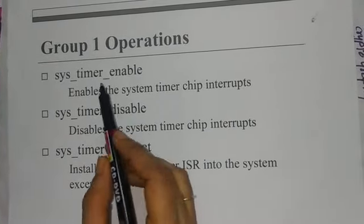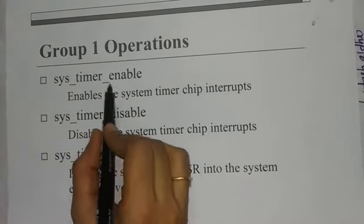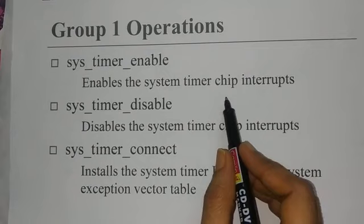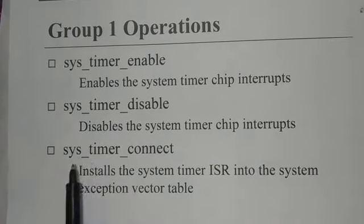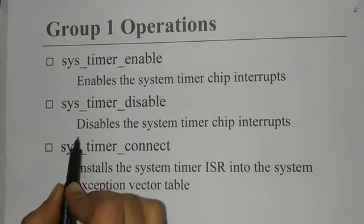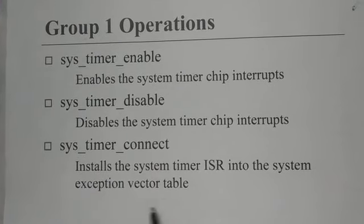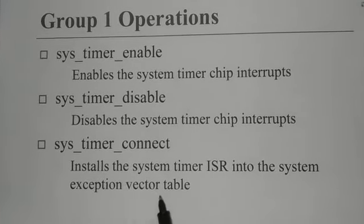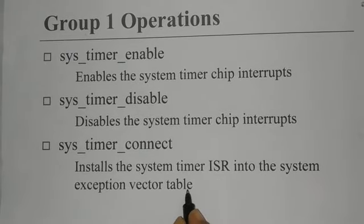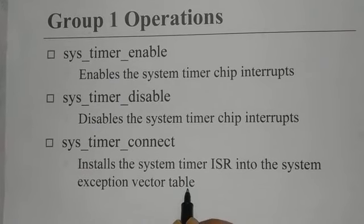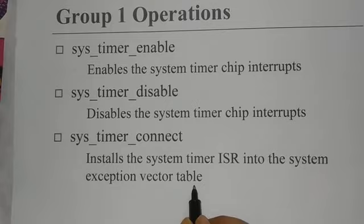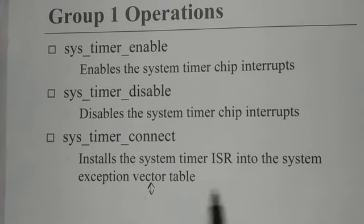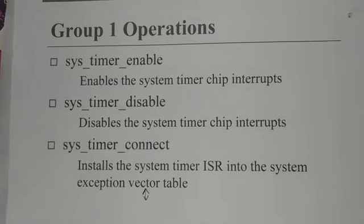Group 1 operations: the first function is system timer enable, which enables the system timer chip interrupts. In this timer mechanism, each thing is maintained by chips, such as the CMOS battery — enabling pin, disabling pin, set and reset. Next is system timer connect, which installs the system timer ISR into the system exception vector table — also called the interrupt vector table. This table stores how many interrupts are occurring, how many are in execution state, and related information about the ISR.